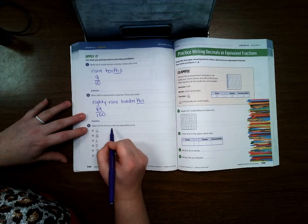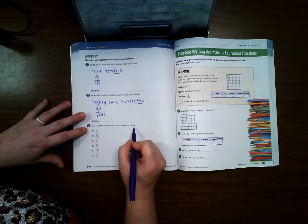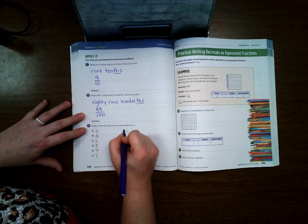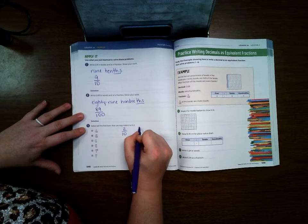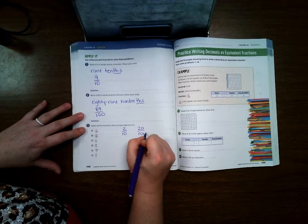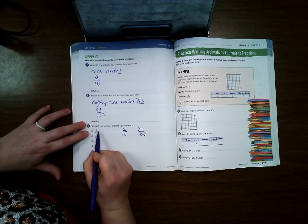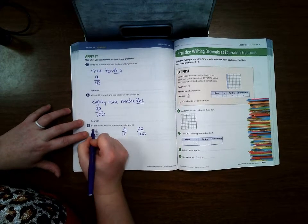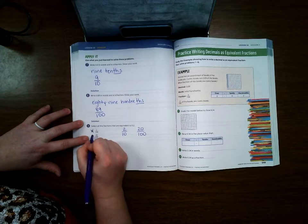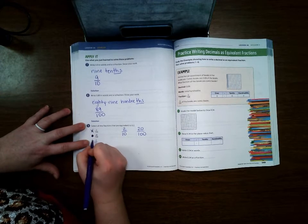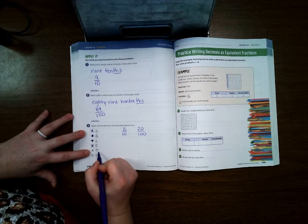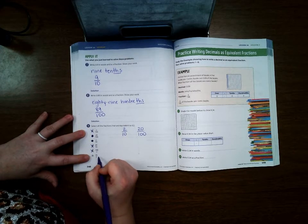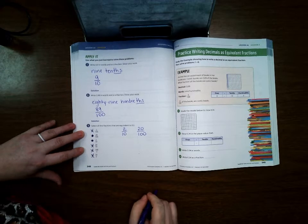Number nine: Select all the fractions that are equivalent to two tenths. So we would have 2/10, or we can add a zero onto both of those and make them 20/100. Two one-hundredths? No. Twenty-one hundredths? Yes. Two tenths? Yes. Twenty tenths? No. Hundred over two? No. Ten over two? No. So your answers are B and C.